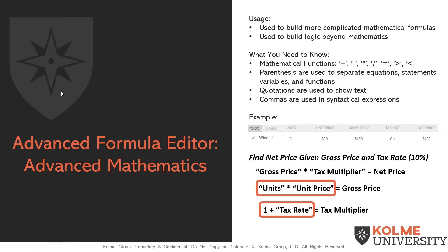As we can see here, and as we already saw in the previous example, units times unit price is the gross price. One plus your tax rate is your tax multiplier. So, so long as you put these two individual equations in parentheses and together in the advanced formula editor, you will be able to get the net price. And let me show you how that looks.